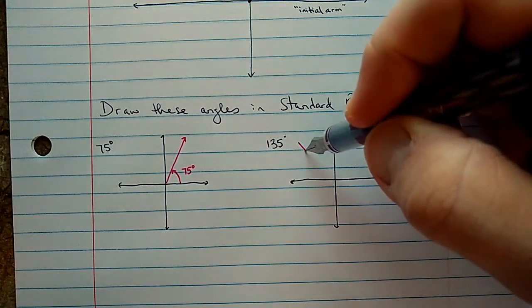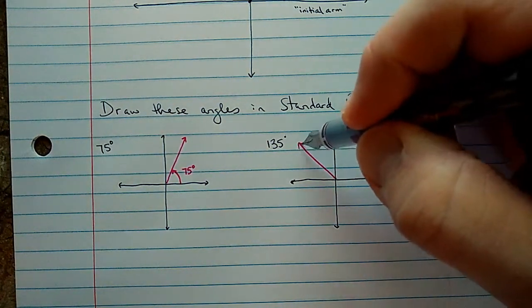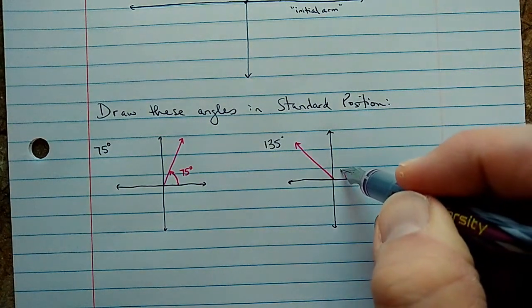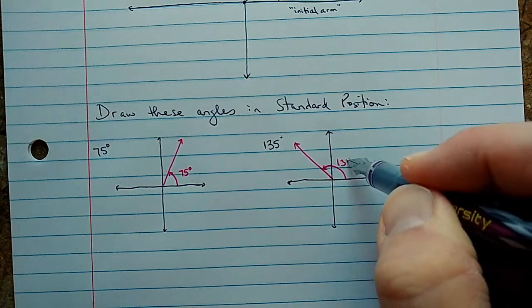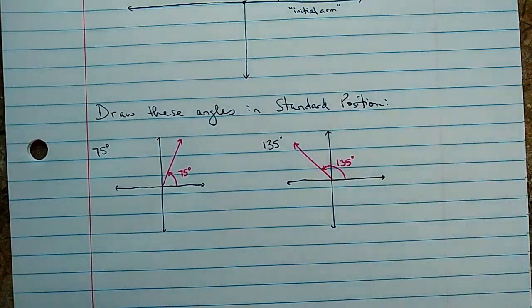So the terminal arm will be here. Measuring from the positive x-axis, we have 90 and then another 45 to there is 135 degrees. There's 135 in standard position.